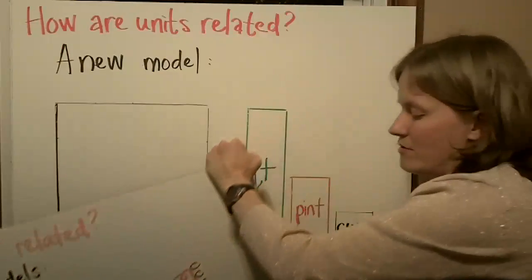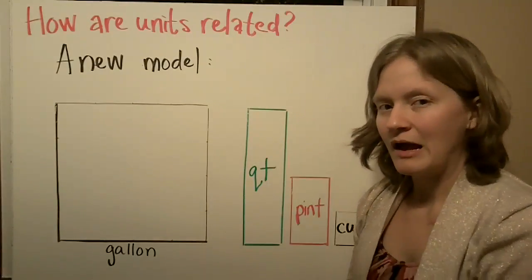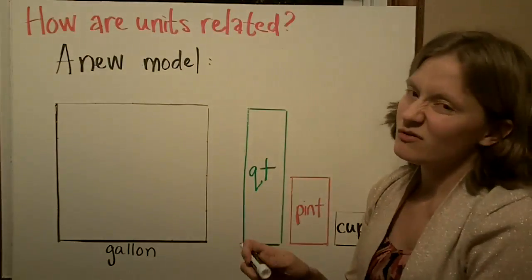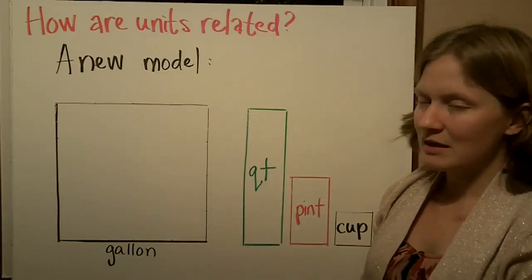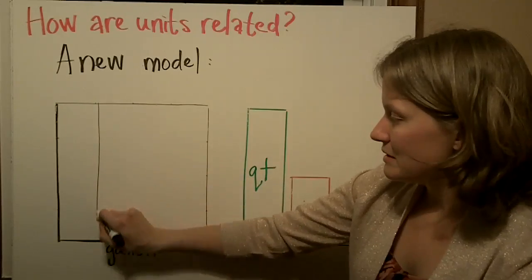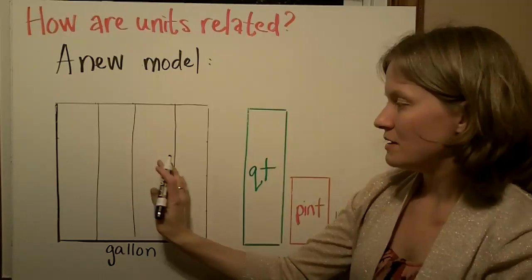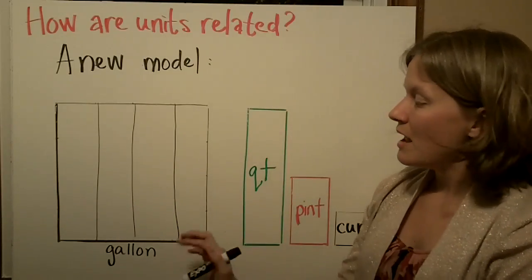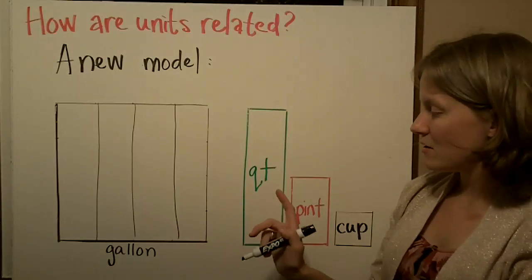There's another model that's new to you, sort of related to fractions. If we think about this big square as a gallon, we can divide it into four pieces, so each piece is the size of a quart. A quart is one-fourth of a gallon.